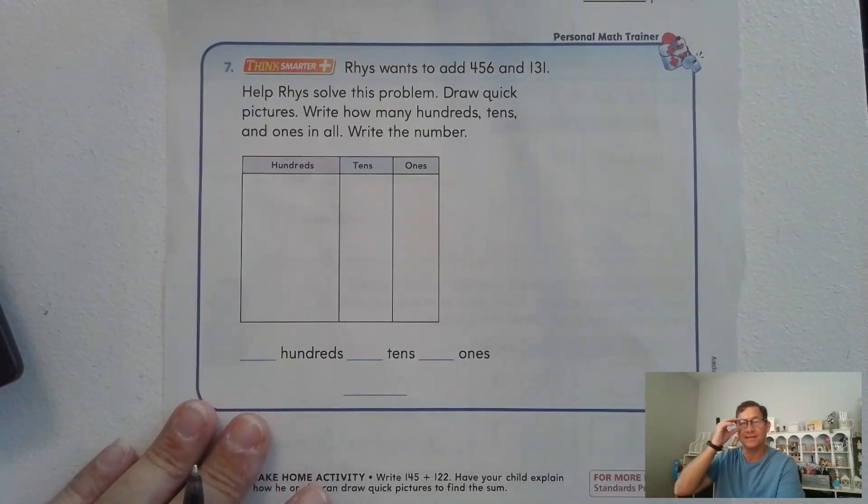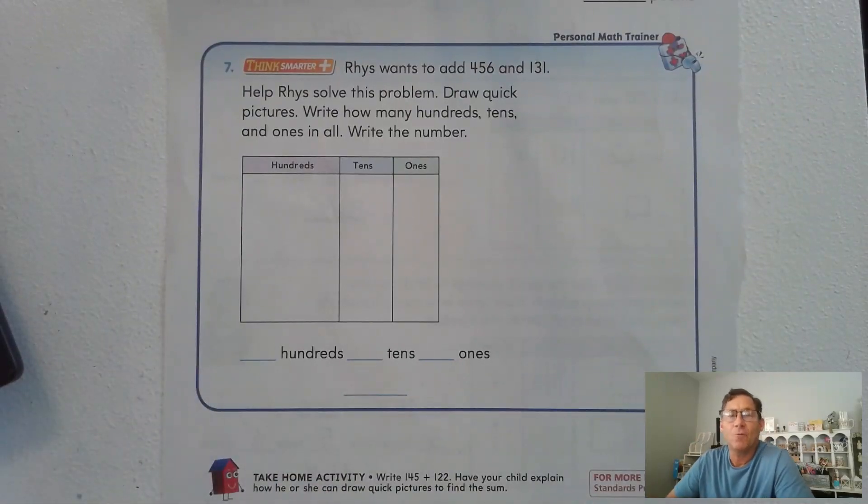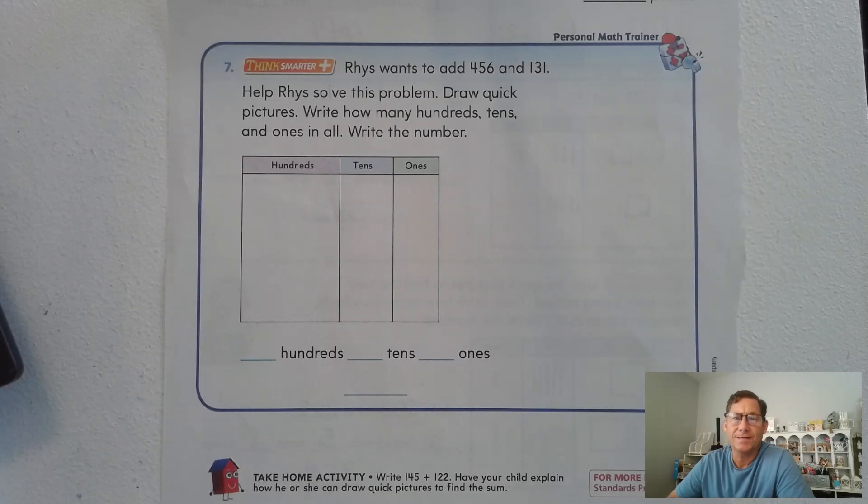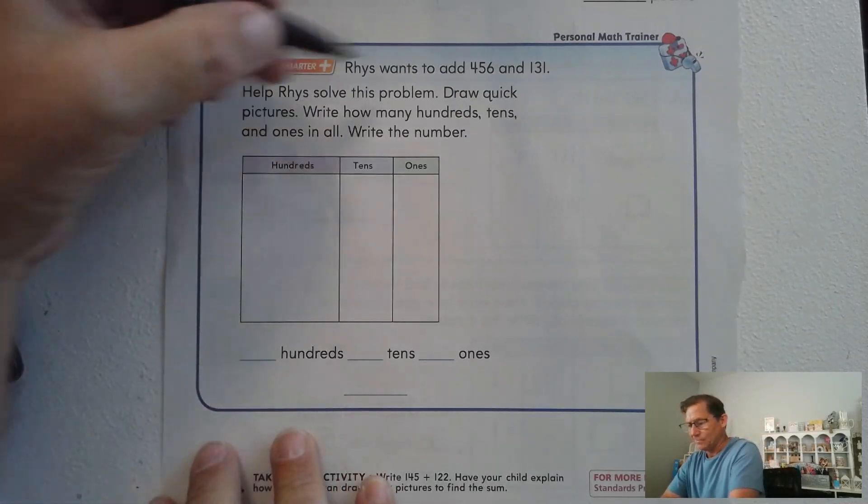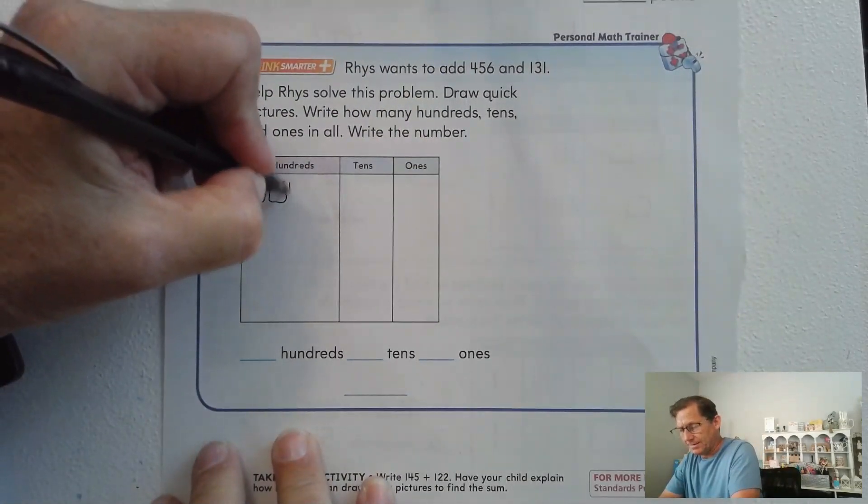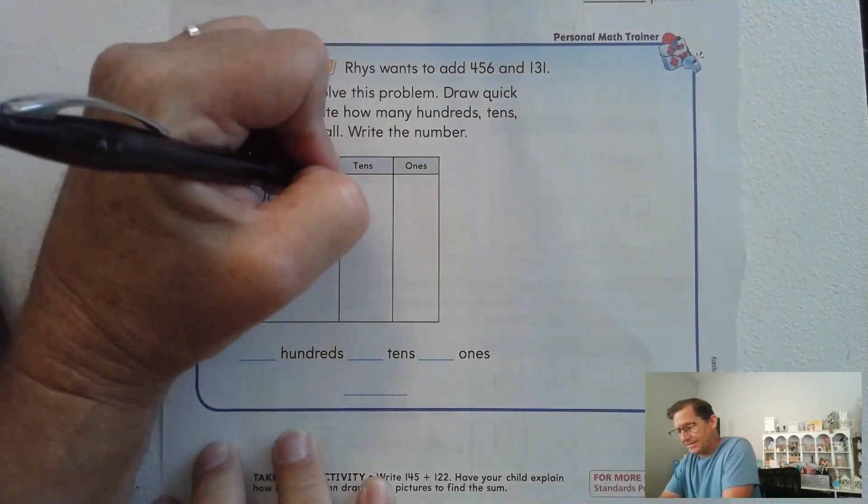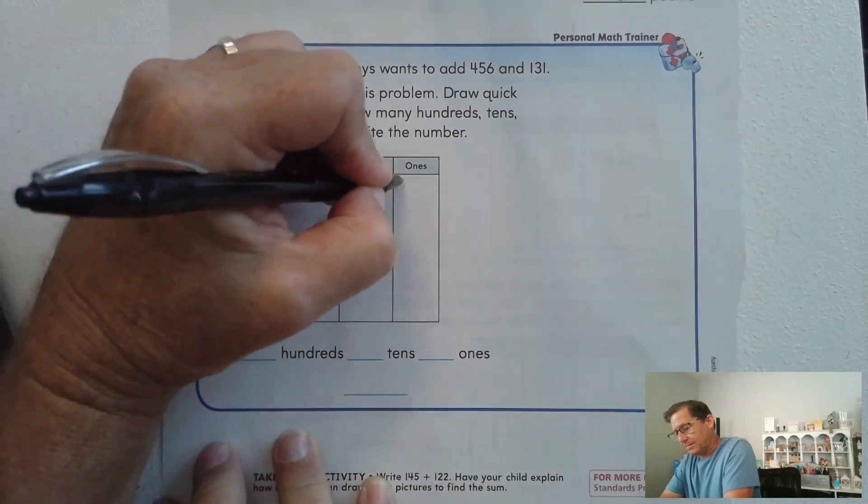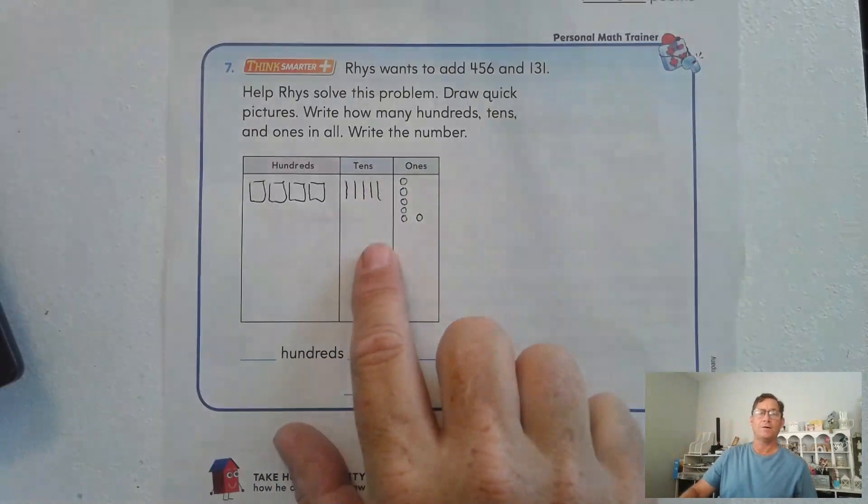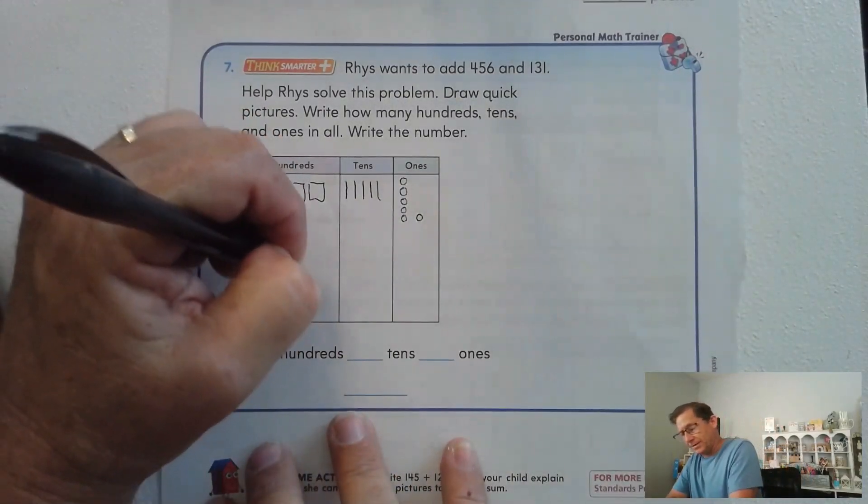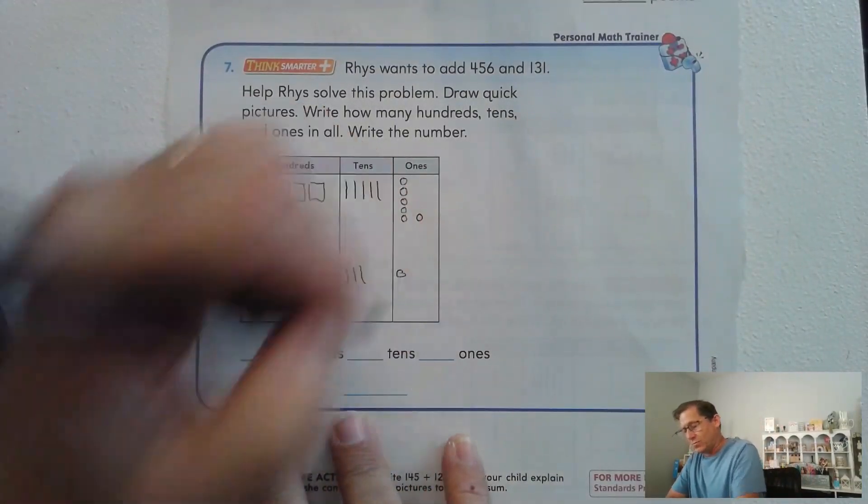And the last one for this lesson. Reese wants to add 456 and 131. Help Reese solve this problem. Draw quick pictures and write how many hundreds, tens, and ones in all, then write the number. All right, so how many hundreds do we have? Well, we have to represent 456. Okay, so there's 456 and we're going to add 131.